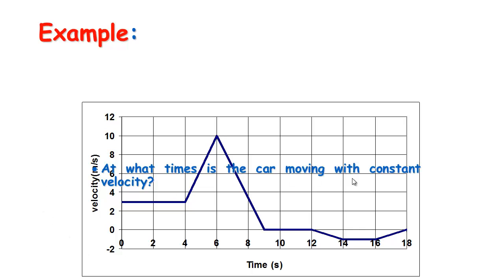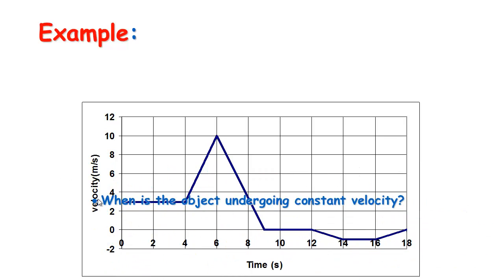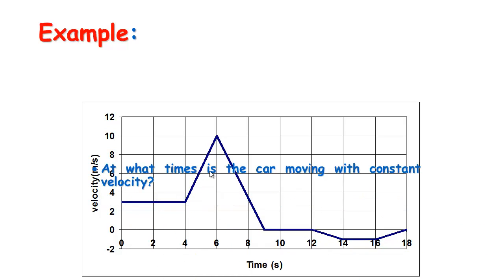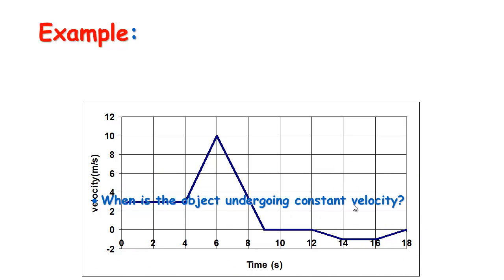When is the car moving with constant velocity? From zero to four seconds, and from 14 to 16 seconds. When is the object undergoing constant acceleration? From four to six seconds, six to nine seconds, twelve to fourteen seconds, and sixteen to eighteen seconds.